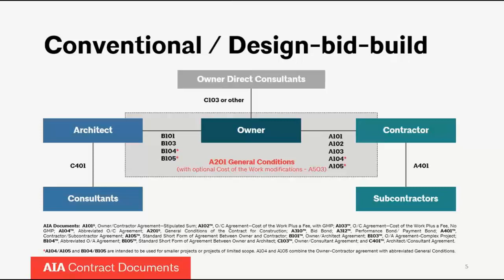You'll hear us refer to that later as the pre-construction phase. It's a pretty linear process, and everything happens on the design side leading up to the finalization of construction documents. Then the owner either goes out to bid or negotiates a price with a general contractor. The owner engages the general contractor and the general contractor engages subcontractors to build the project. So we have a design phase, the design is complete, and then we go to the construction phase.